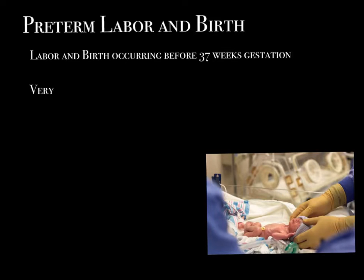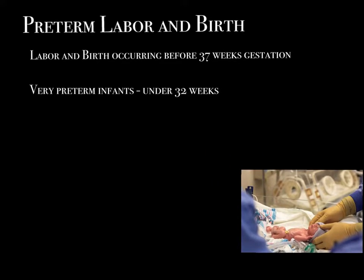Very preterm infants are under 32 weeks. In most cases, wherever mom was planning to deliver, if she starts to go into labor under 32 weeks, she'll be counseled to go to a higher level hospital with a higher level of neonatal intensive care — a Level 3 NICU. Those babies are at extreme risk for all kinds of complications, including retinopathy, pulmonary disease, necrotizing enterocolitis (NEC), cerebral palsy, and a lot of different developmental disabilities. So it really is important to get them the appropriate level of care.